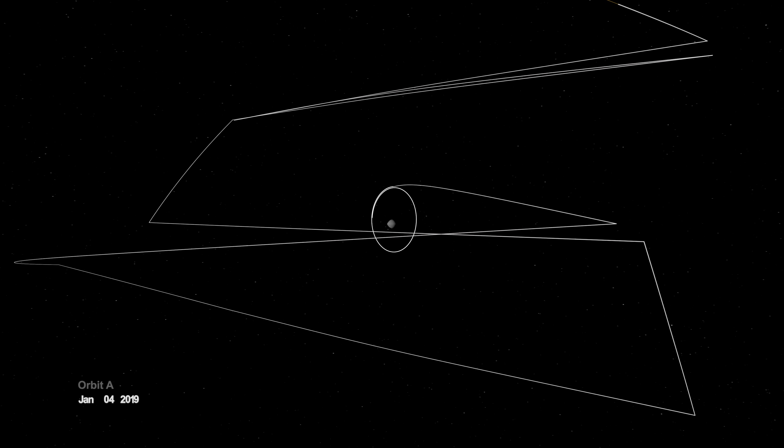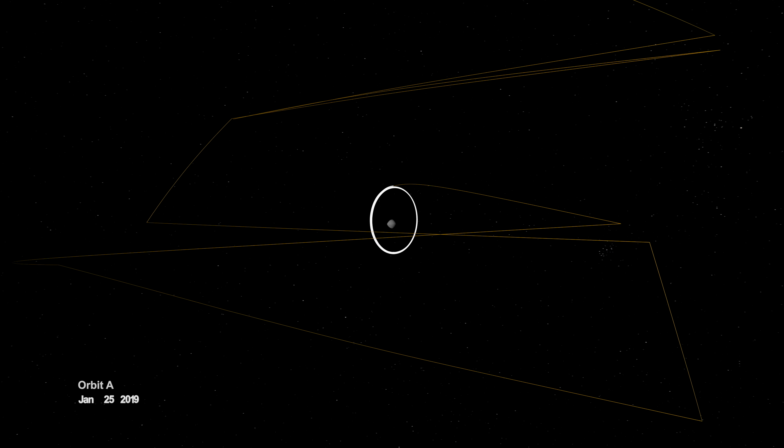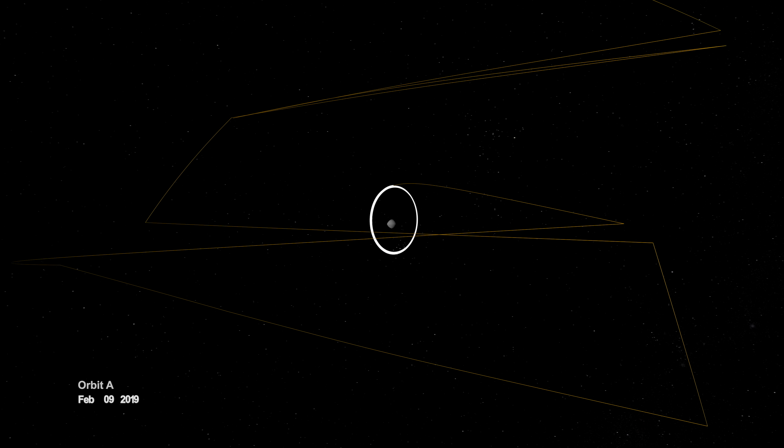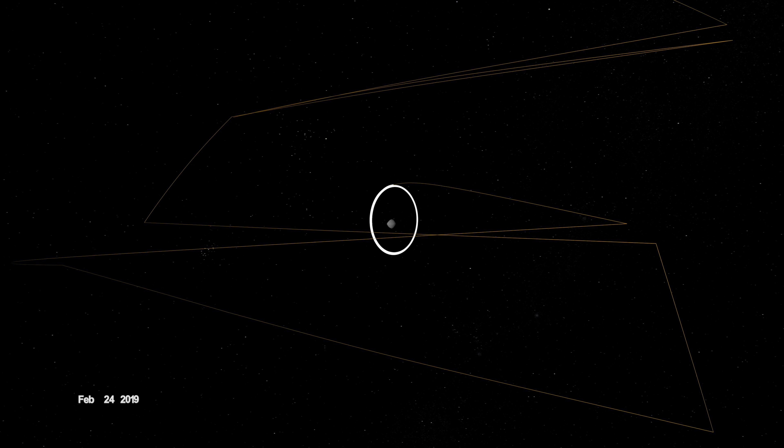On New Year's Eve, OSIRIS-REx was captured into orbit by Bennu's minuscule gravity, making it the smallest world ever to be orbited by a spacecraft.